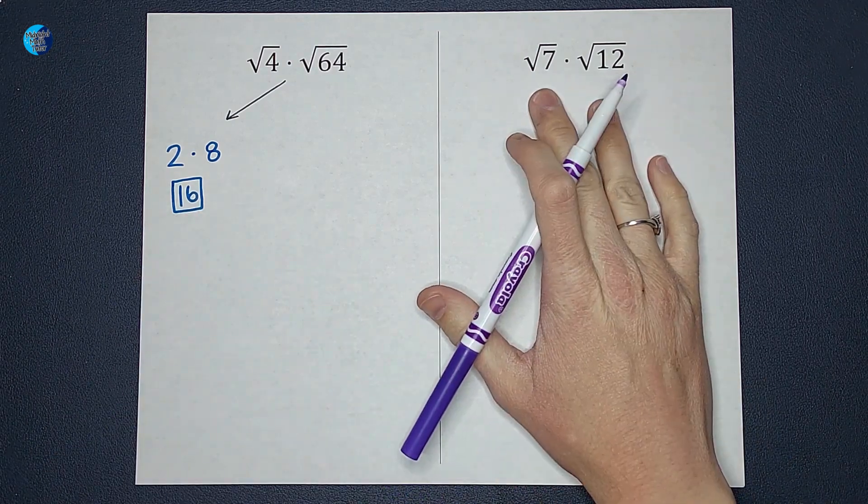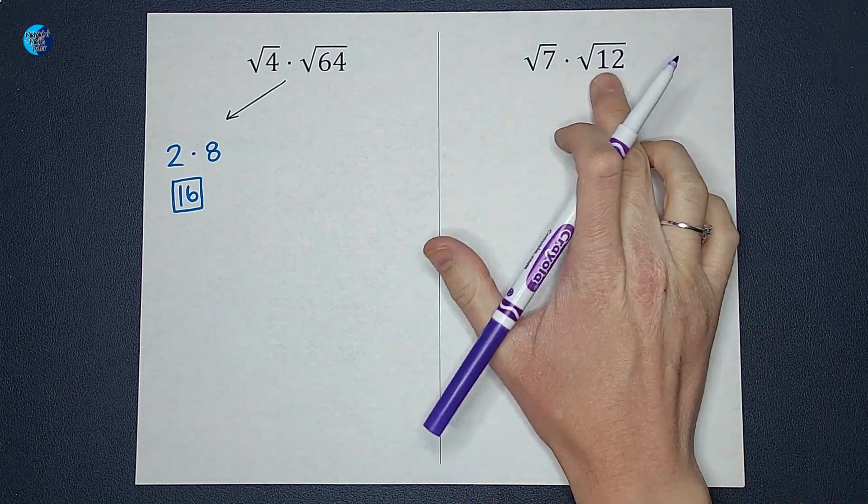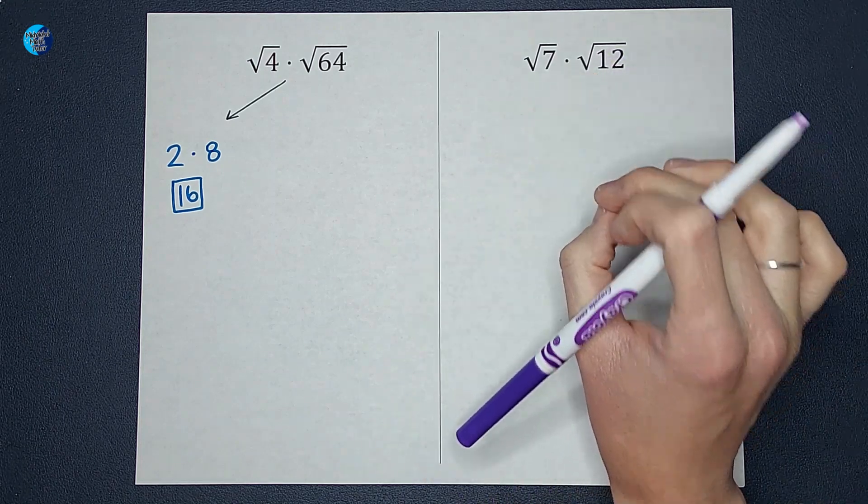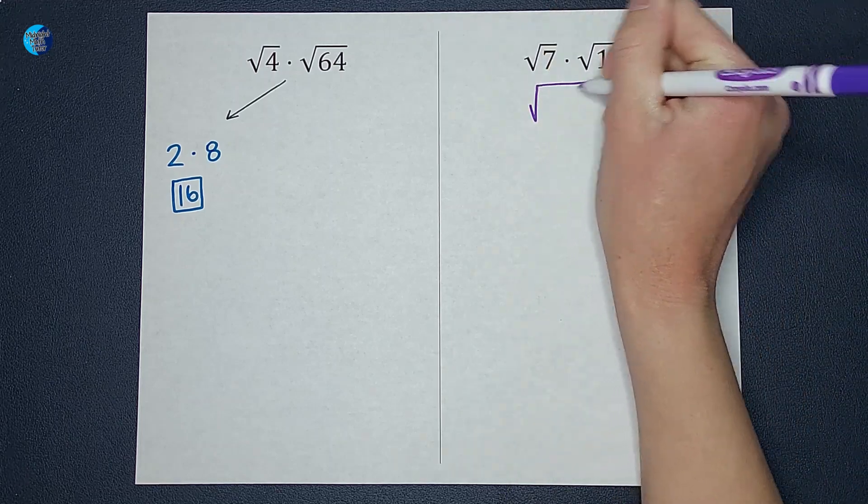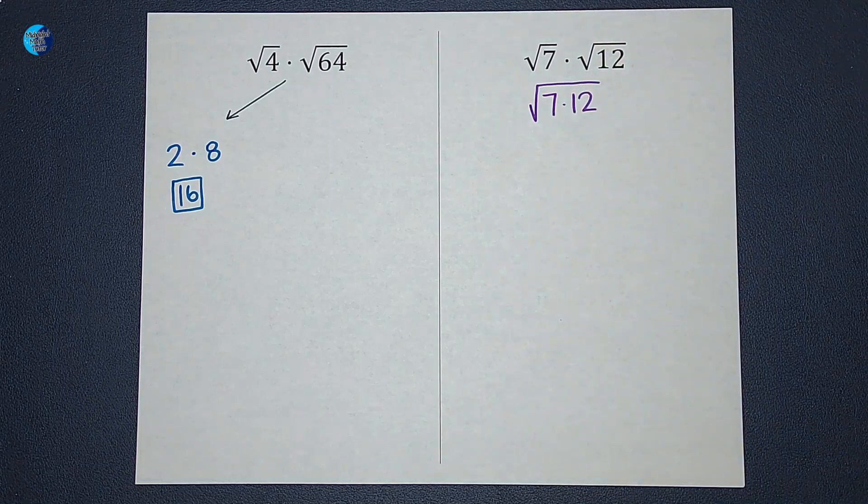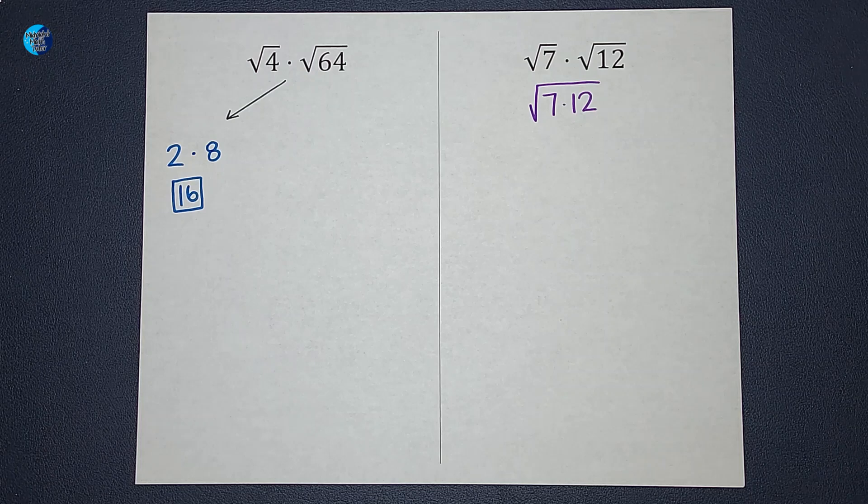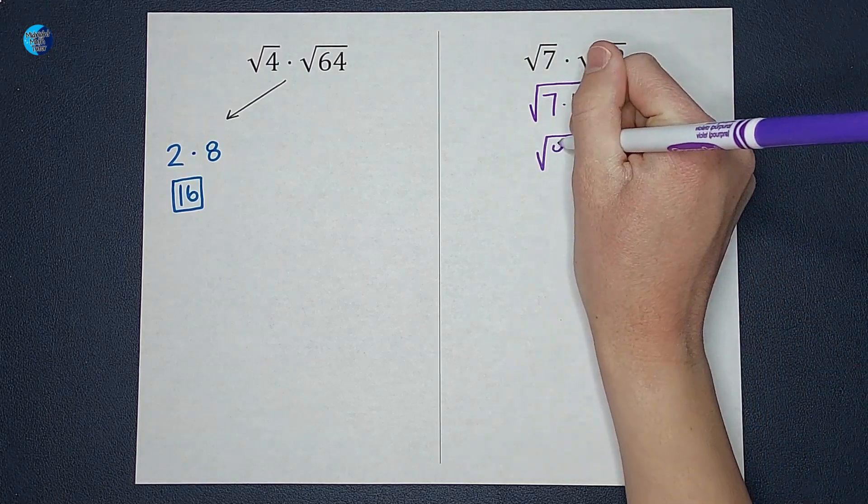When we have square roots like this and we don't want to get nasty decimals, we can go ahead and multiply these since they're both under square roots. We can join them together, 7 times 12, under the same square root. Then when I multiply those, 7 times 12, I get the square root of 84.